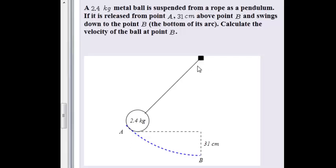So here we can see, here we have a pendulum, 2.4 kg, it's going to be released, it's going to swing down, and the height between point B and point A, in other words, the vertical height is 31 cm.